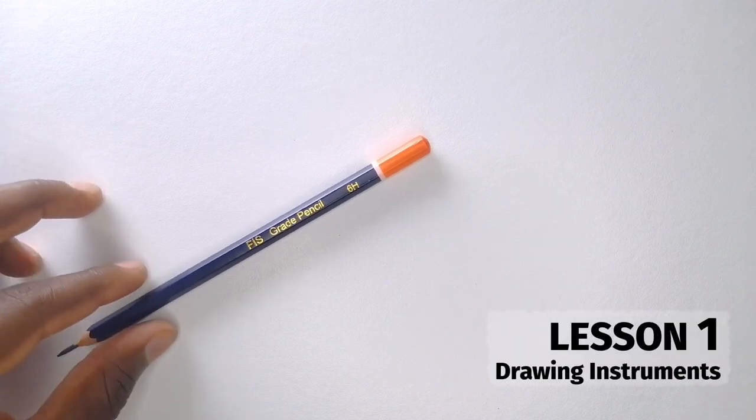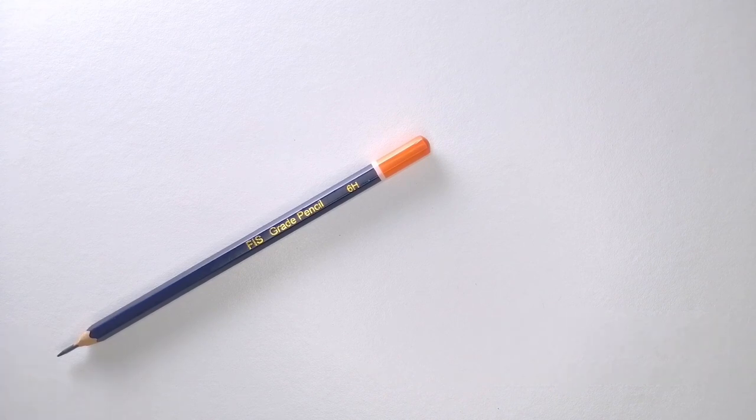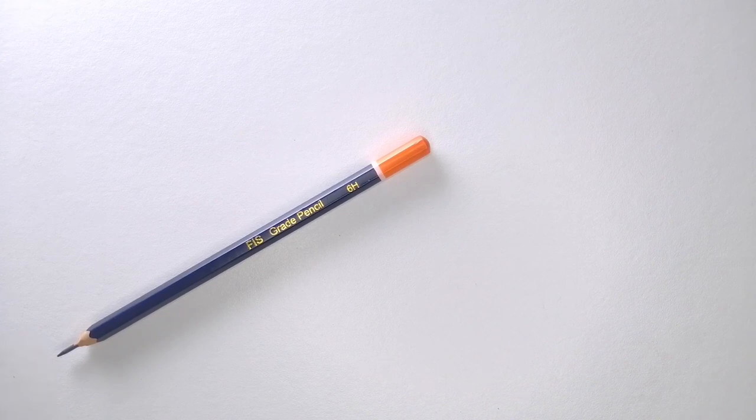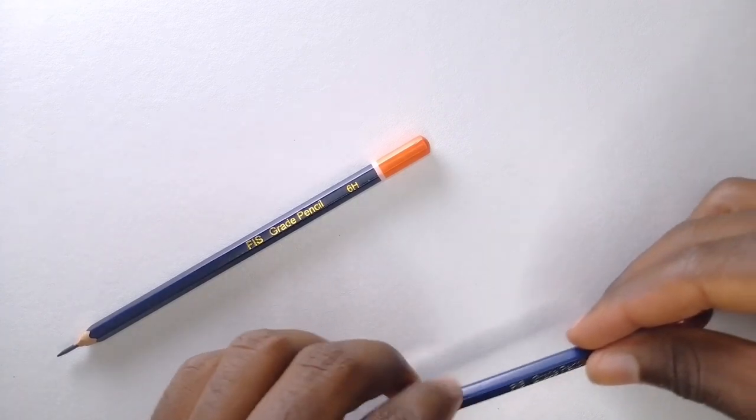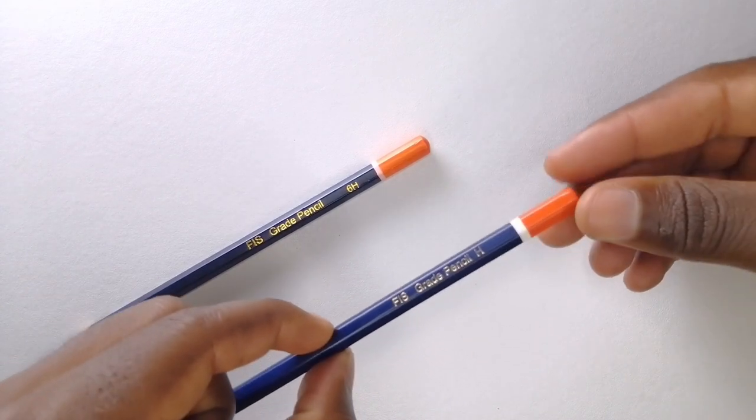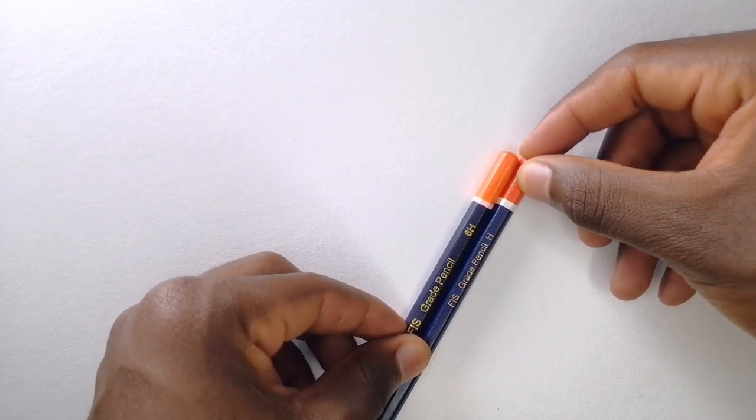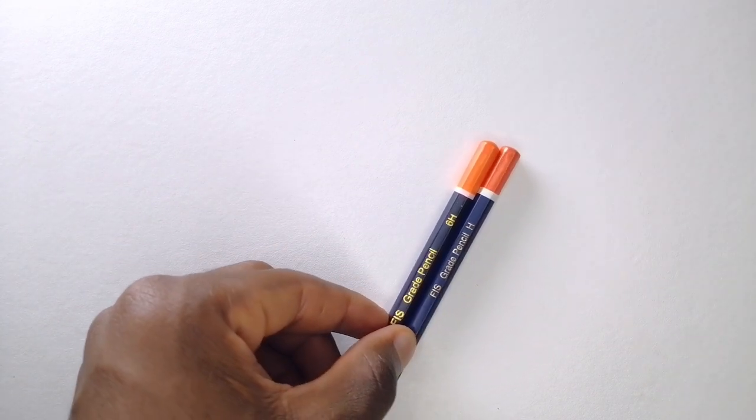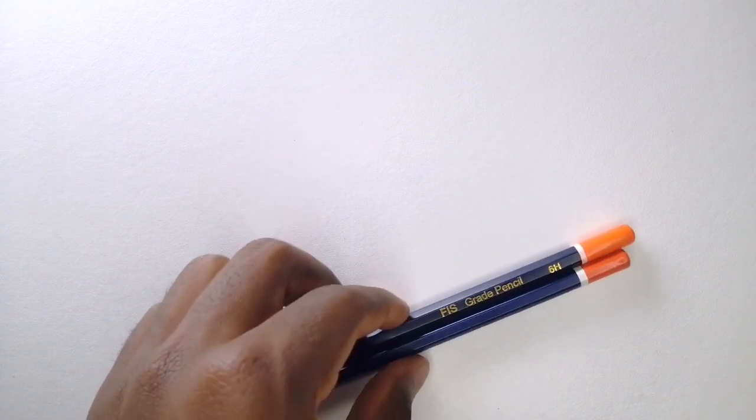Welcome to this lecture where we're going to look at the instruments you need. Since this is a drawing course, you need some pencils. The most basic pencils you need are a 2H or an H pencil - the H pencil will help you make dark lines. You also need a lighter pencil, 6H, that will help you make construction lines.